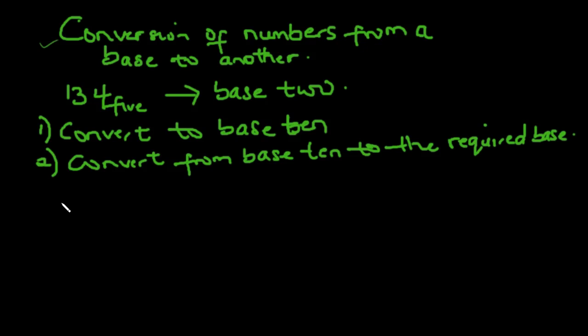So we convert to base 10. I'm just going to use the power expansion method. So I write 134 base 5. Number the power from your right starting from 0. So I have now 1 multiplied by 5 raised to power 2, next number 3 multiplied by 5 raised to power 1, next number 4 multiplied by 5 raised to power 0.